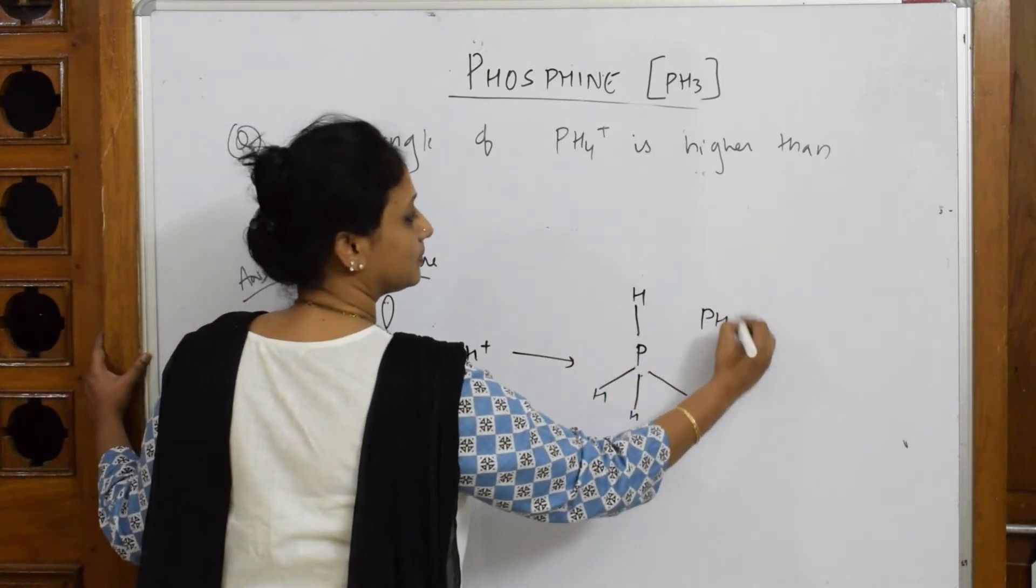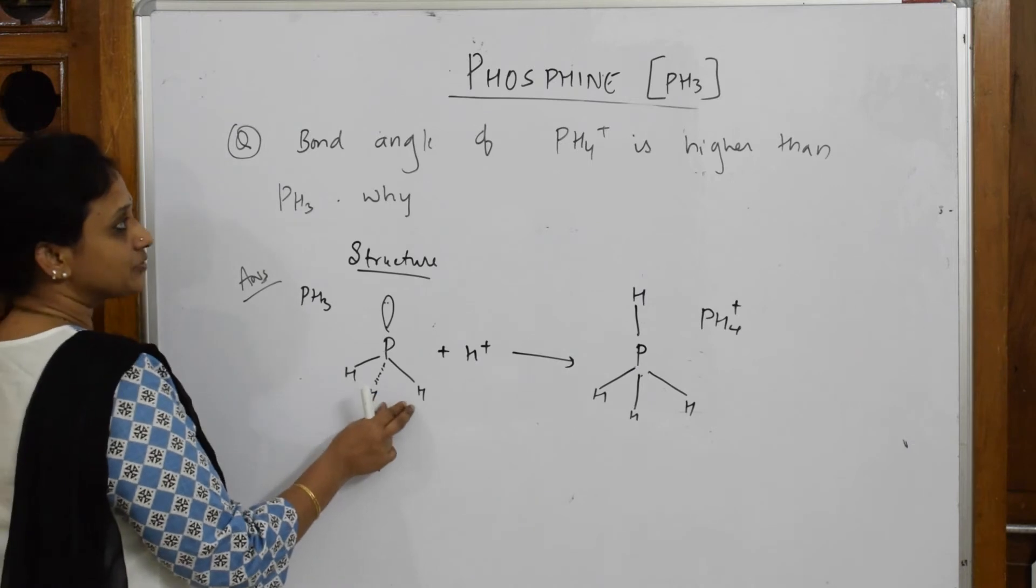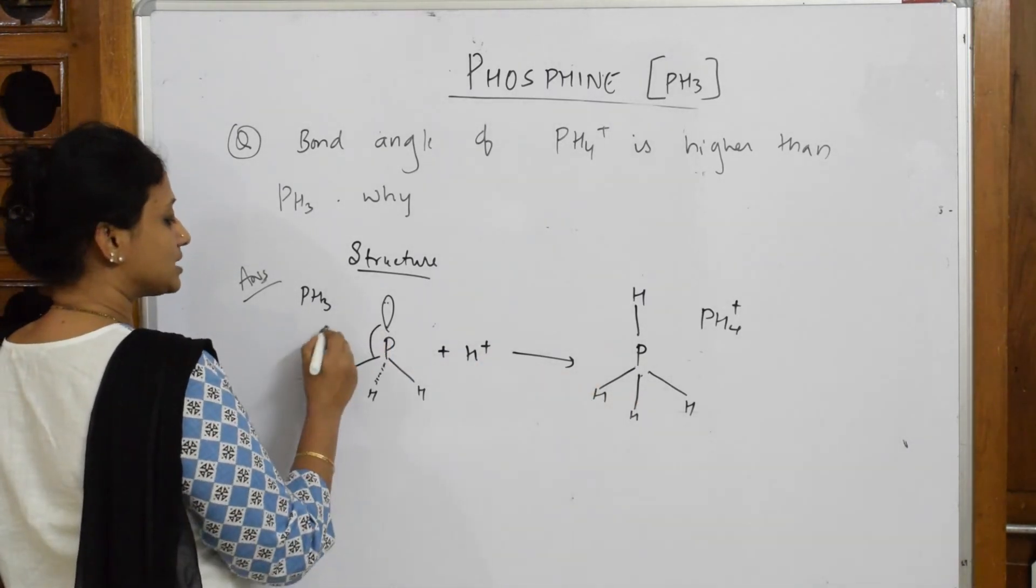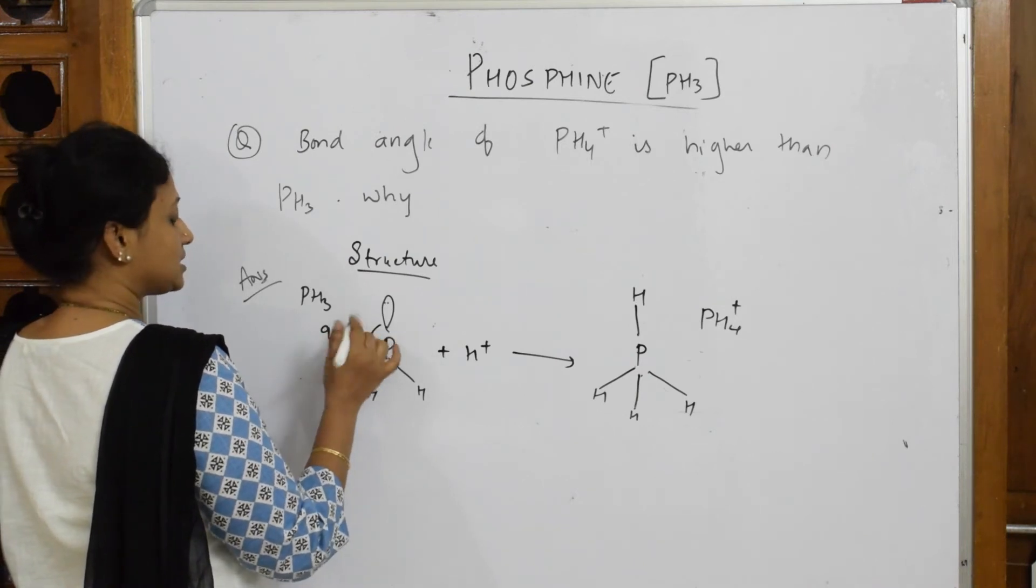Now what do they ask us? The bond angle of this versus this. So what is the bond angle here? The bond angle is 93.6 degrees.